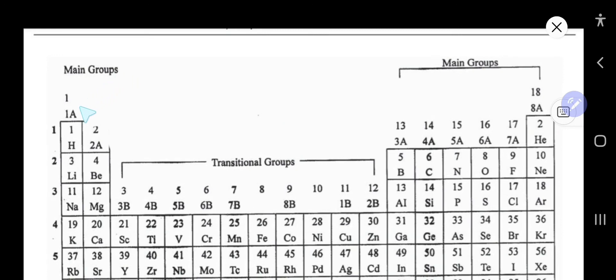For elements in groups 1, 2, and 13 to 18, the group number equals the number of valence electrons. Nitrogen is in group 5A or 15. Since nitrogen is in group 5A...